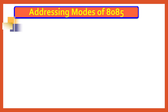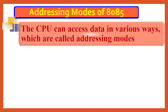Generally, addressing modes means a data can be accessed by the microprocessor in various ways. The data may be available with the programmer, or data may be available in a register, or data may be available in external memory. Different options are there, so we can handle data effectively and write the program effectively. That's the reason why we are studying addressing modes — if you are clear about addressing modes, we can write programs effectively.